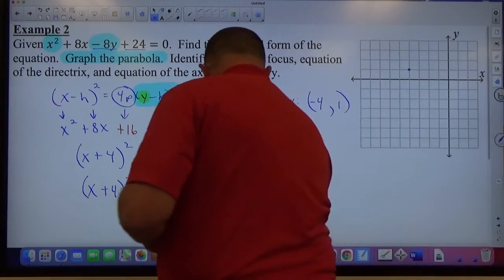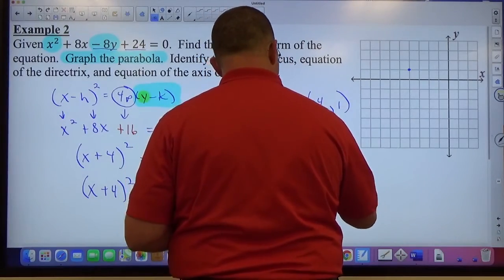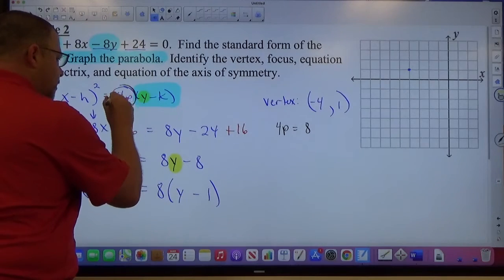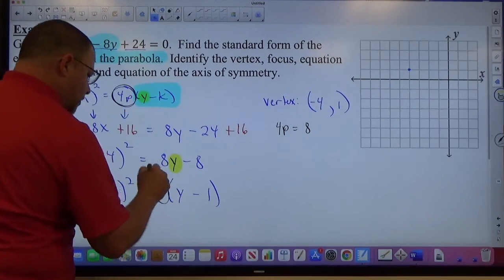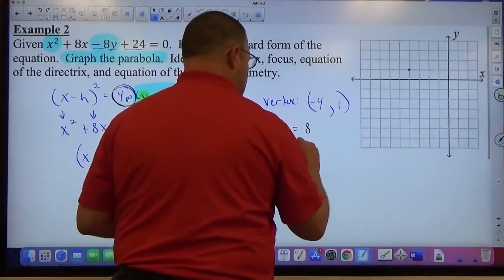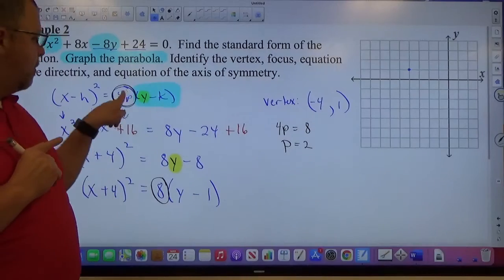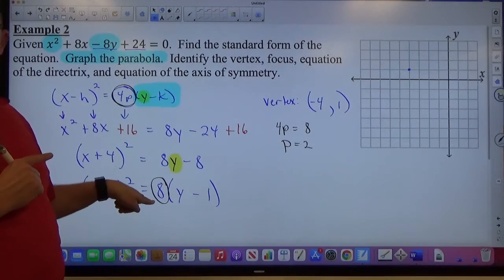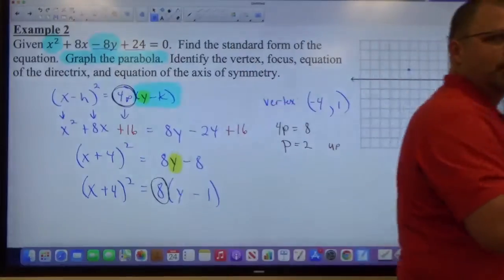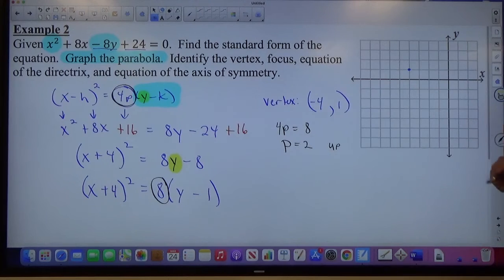I can see that 4p equals 8, because 4p is right here, whatever is in front of that. So 4p equals 8, which means p equals 2. In addition, 4p is a positive 8, so p is positive 2, which tells me this is an up parabola. I'm going to go up to get the focus. I'm going to have to go down to get the directrix. So I'm going to go up 2 for my focus.